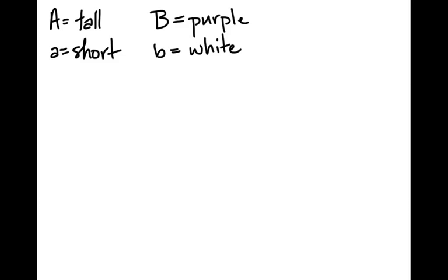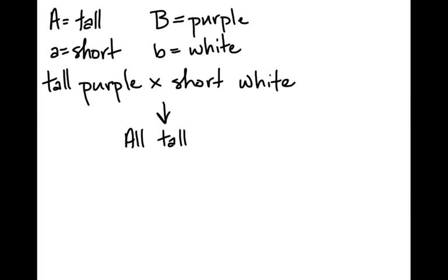So if you're looking at this, we know that our parents are tall and purple crossed with short and white. And we know that the outcome is going to give us all tall and half purple, half white. And so we can again work out monohybrid crosses to help us solve this dihybrid problem like I showed you at the end of the genetics screencast.